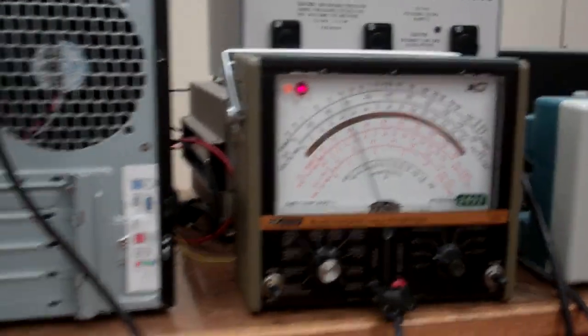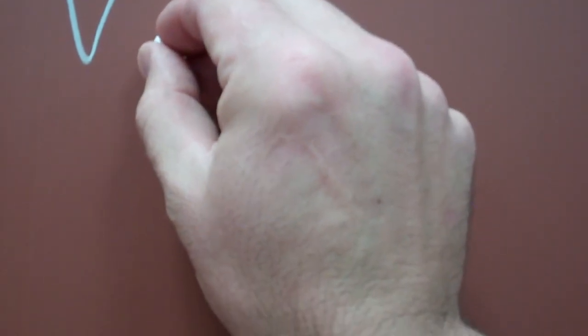Now, that gives us what we call the percent of regulation. And what we're going to do is we're going to take the voltage of full load minus the voltage of no load minus the voltage of full load. In this case, it was 20 minus 14. And we're going to divide that by the voltage of the full load. And that's going to give us the percent of regulation.